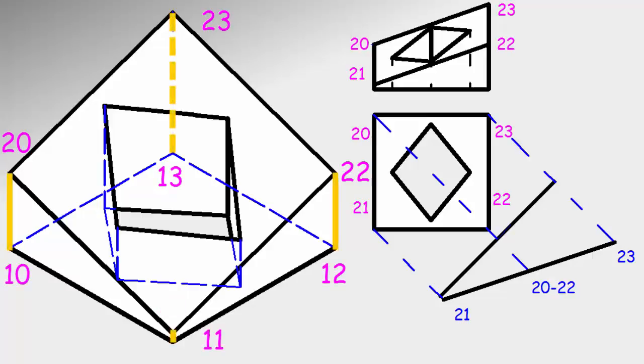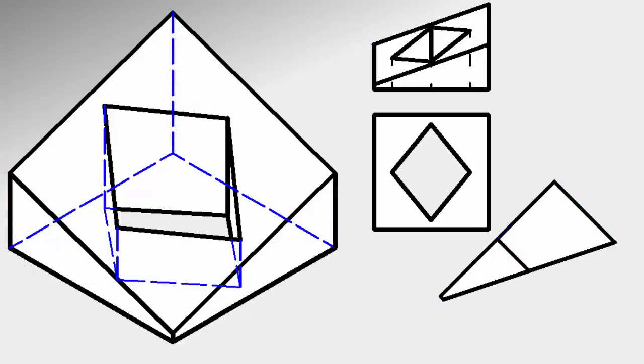We continue joining the side edges. You need only look at the order in which they are attached: 10 is linked with 20, 11 with 21, 12 with 22, and 13 with 23.